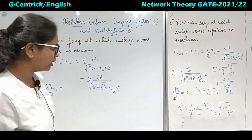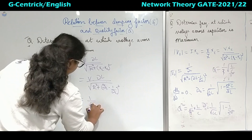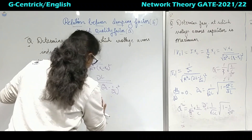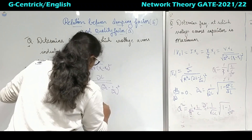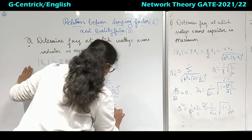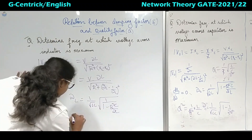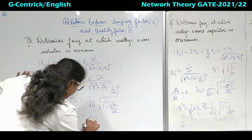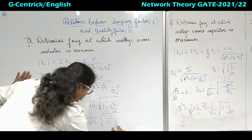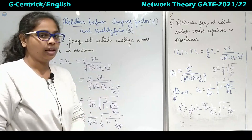Again we differentiate VL with respect to omega and equate it to zero. The result is omega L equals 1 upon root LC, times 1 over under root of (1 minus R squared C by 2L). Substituting the quality factor, we get omega L equals 1 by root LC times 1 over under root of (1 minus 1 upon 2Q squared). This is the maximum frequency across the inductor.